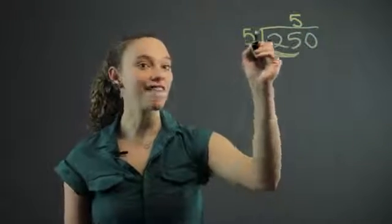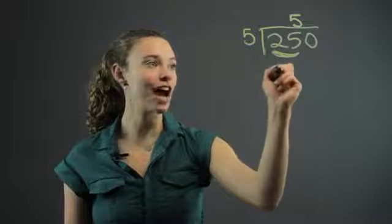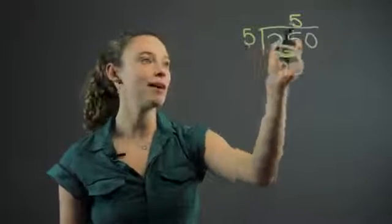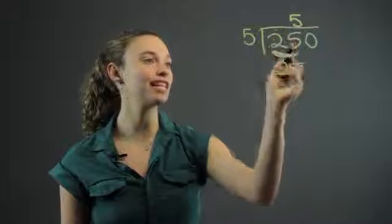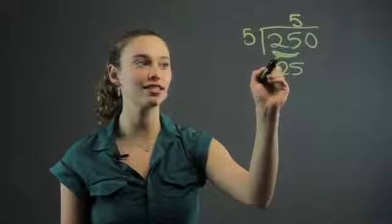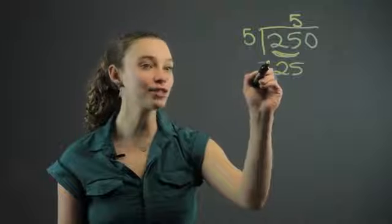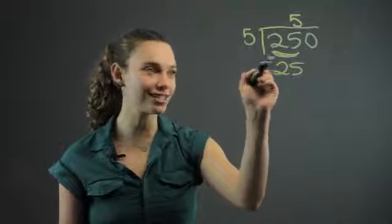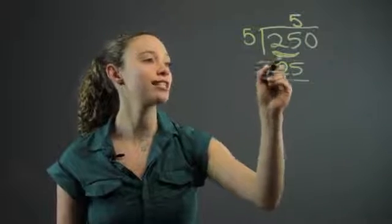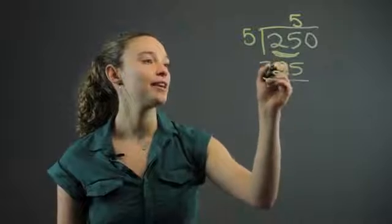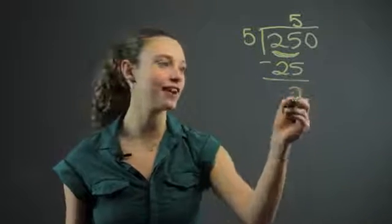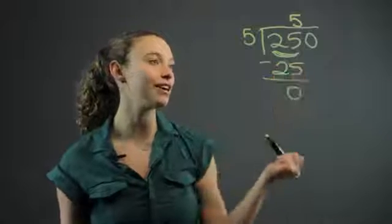Then we multiply. 5 times 5 is 25. Make sure you line up that number that you multiplied directly below this number. Then you subtract — that's the next step. You have to subtract this number that you multiplied from this number. In this case, it's just 0. 25 minus 25 is 0.